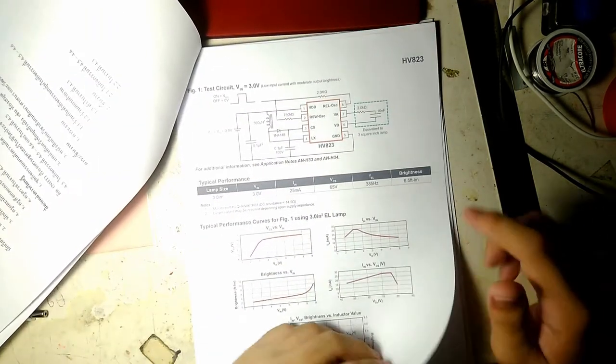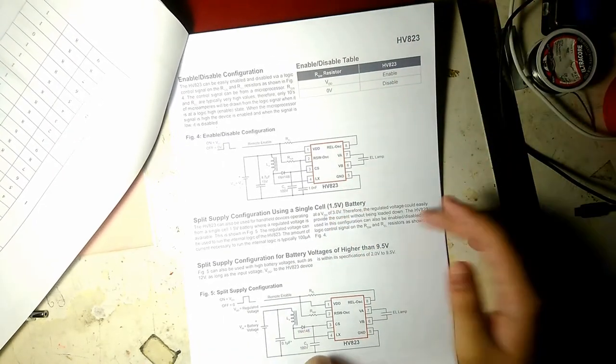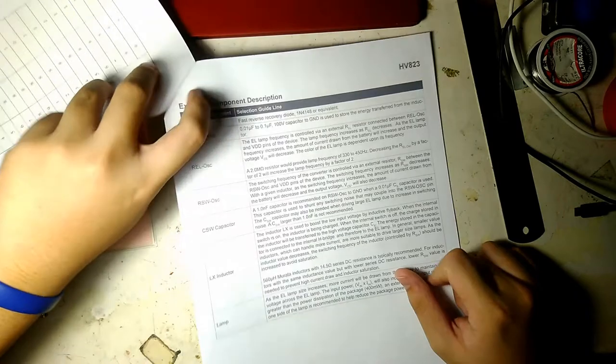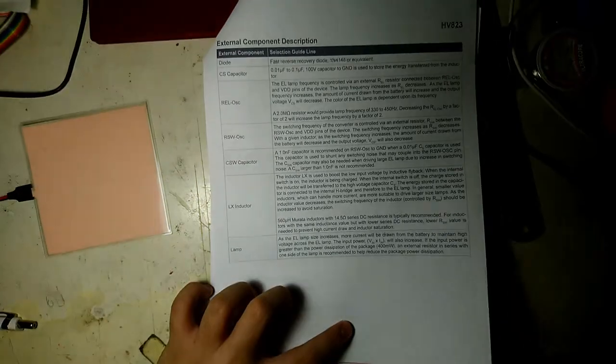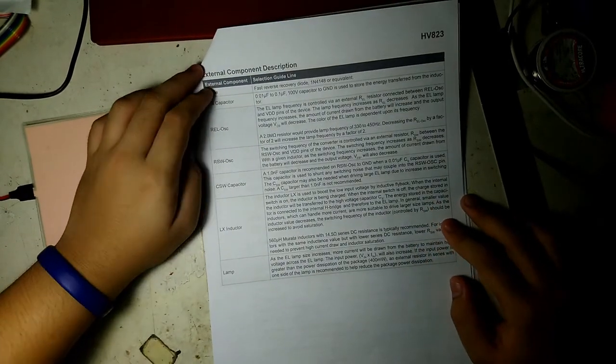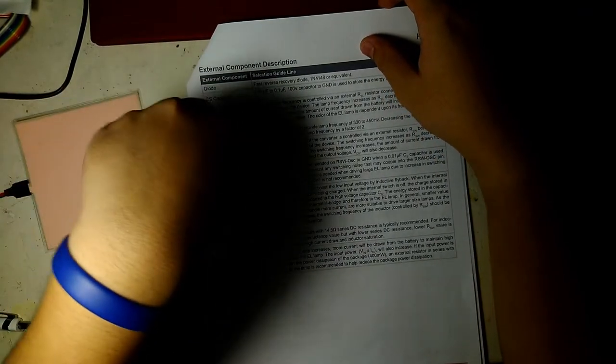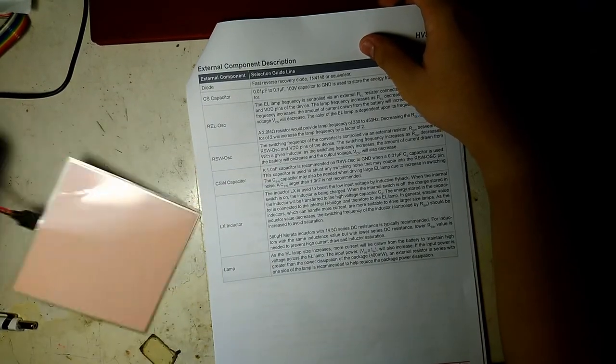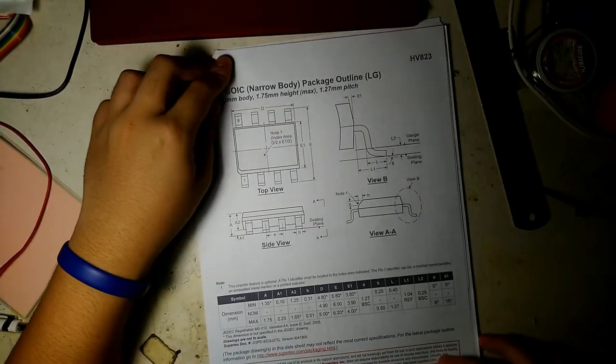This is a solid 8-pin package. Let's go through here. You have a test circuit, application examples, and external components. Let me crank down the exposure a bit so you can see it clearly. We have a diode, a capacitor, two resistors, another capacitor, an inductor, and finally the EL lamp itself.